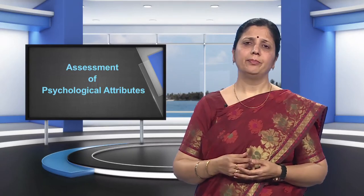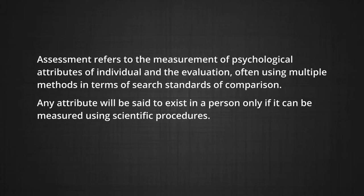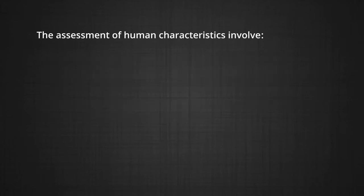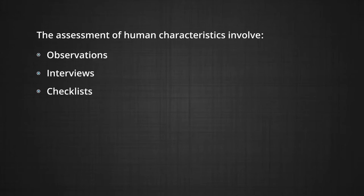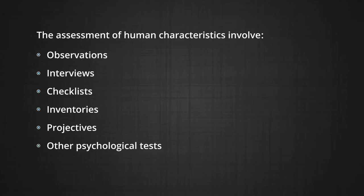Assessment of psychological attributes. All psychological attributes are involved in very simple phenomena like reaction time and also in highly global concepts like happiness. It is difficult to count and specify the number of psychological attributes that can be assessed. Psychological testing in its modern form originated more than about 100 years ago in laboratory studies of sensory discrimination, motor skills and reaction time. Assessment refers to measurement or evaluation of psychological attributes of an individual, often using multiple methods in terms of standards of comparison. Any attribute will be said to exist in a person only if it can be measured using scientific procedures. The assessment of human characteristics involves observations, interviews, checklists, inventories, projective tests and other psychological tests.